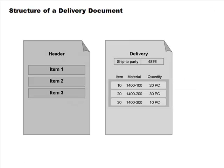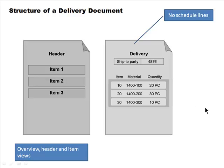The delivery document structure is simpler than the sales order — it has a header and items but no schedule lines, since schedule lines exist only in sales orders. The delivery document focuses on ship-to party, materials, and quantities. Like many SAP documents, it has multiple views: overview, header detail, and item detail.